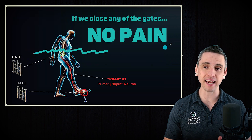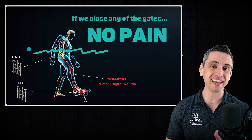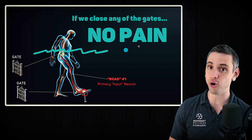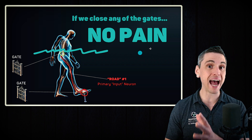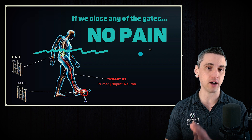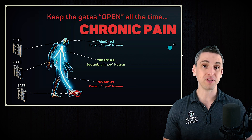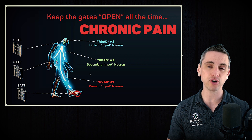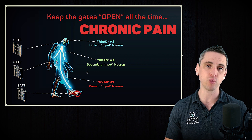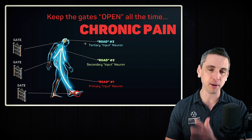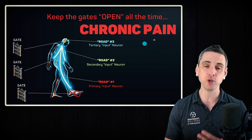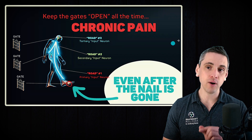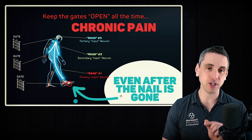To give you a teaser of where we're headed: if we close one of the gates and keep it closed, we're going to have no pain. But the opposite of that is what's happening for most of you in chronic pain — these gates are just open all the time. Anybody can waltz through. The brain is getting bombarded with danger signals, so you have chronic pain even when this is not from a damage issue.